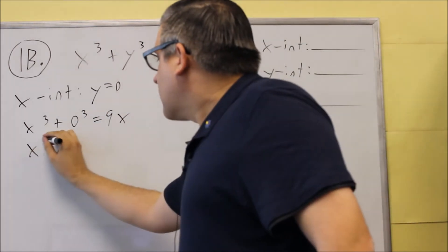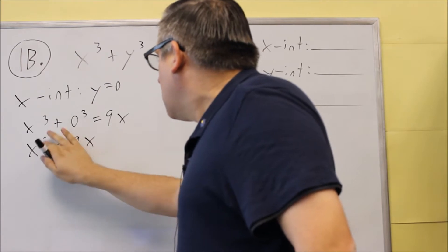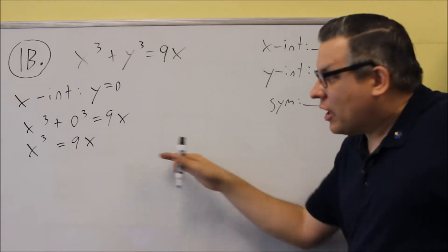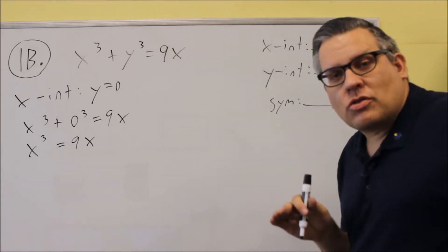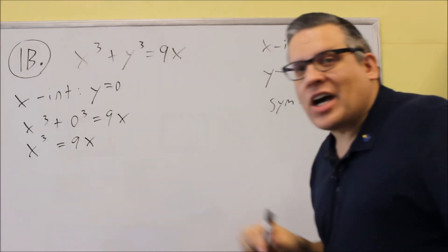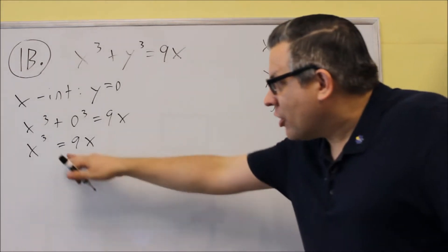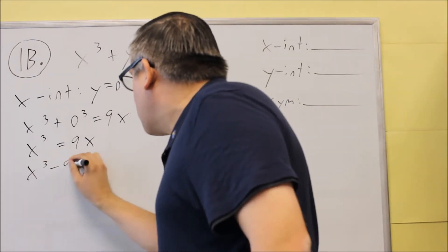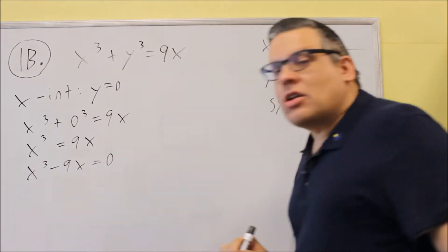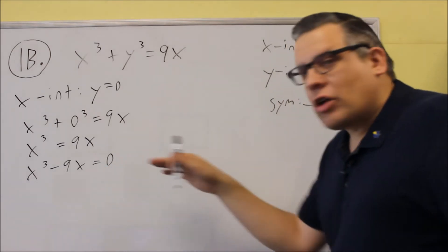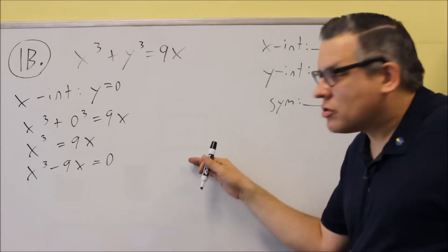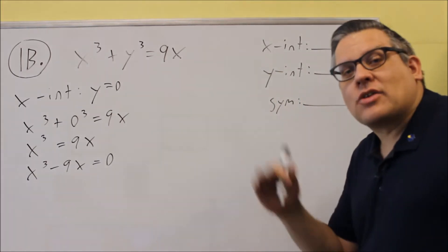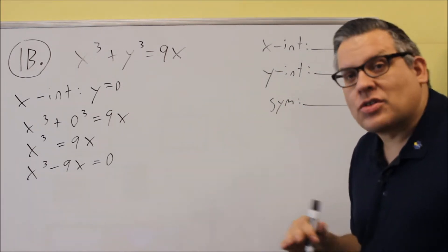We get x cubed equals 9x. Now, make sure you don't make a common mistake I see a lot of students making. You do not want to divide both sides by x. If you do, you're not going to get all of your answers. It's also mathematically incorrect, because dividing by x means you might be dividing by 0, which is undefined.